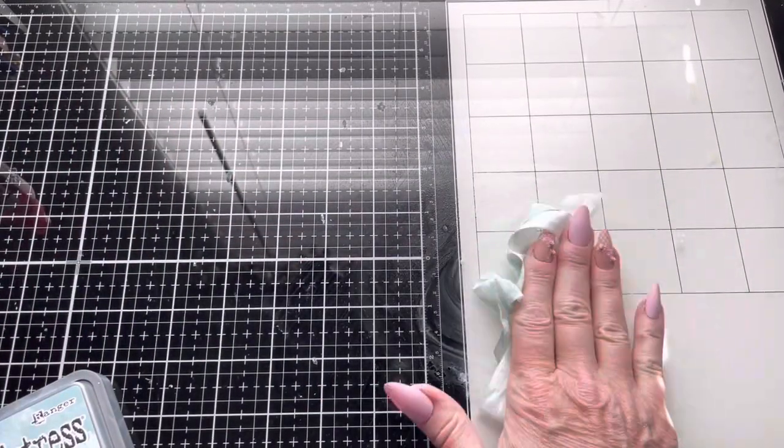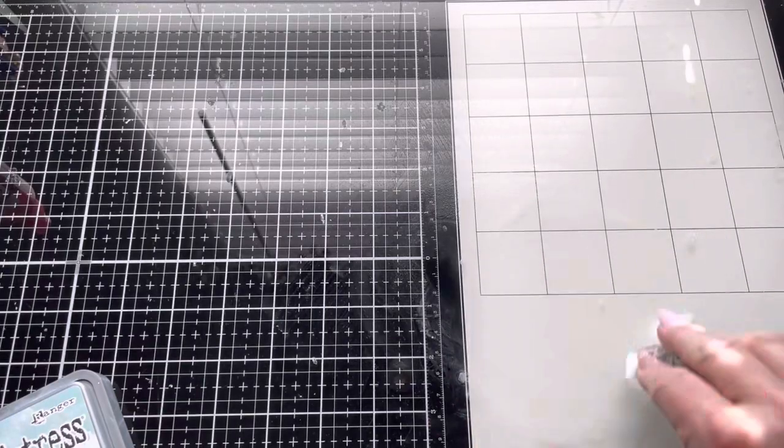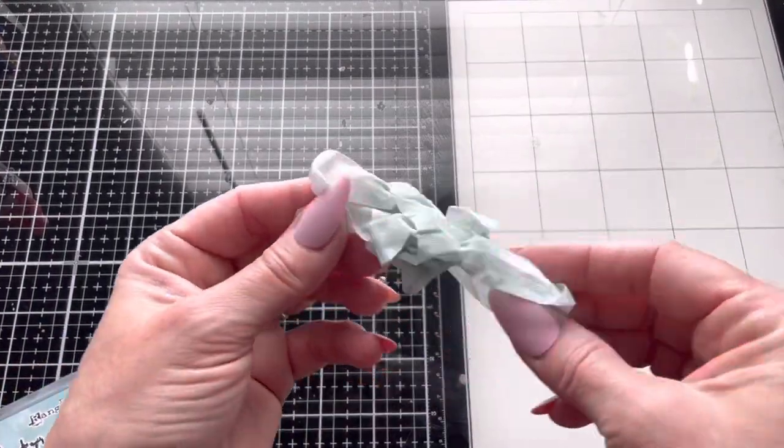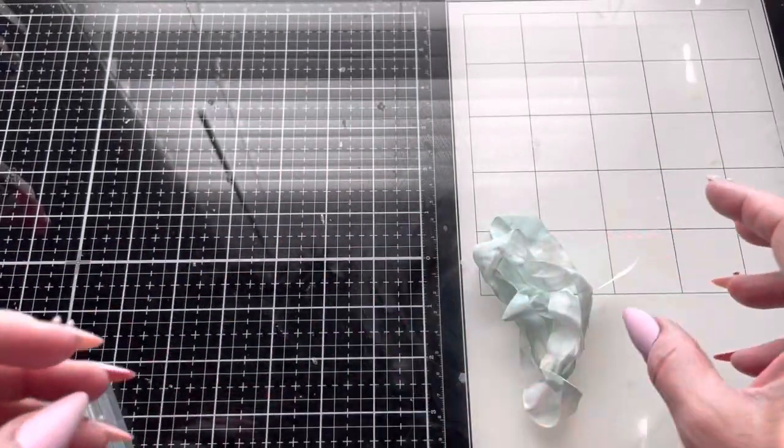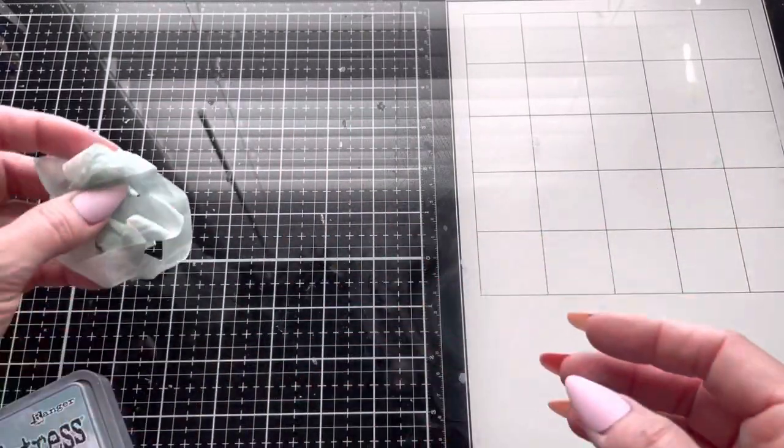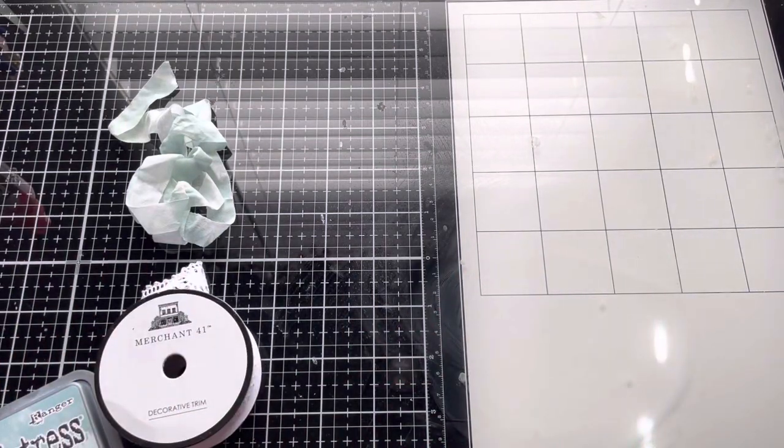I usually just leave it all bunched up like this and that's super easy. Now for the lace, it's virtually the same thing—you put down your antique linen and then put down your distress oxide.